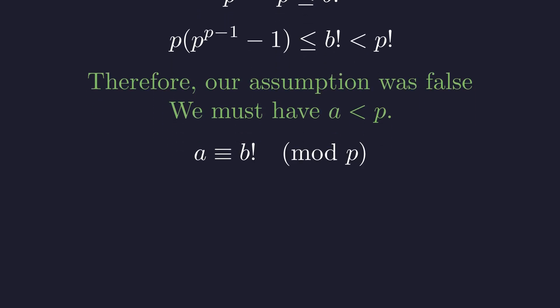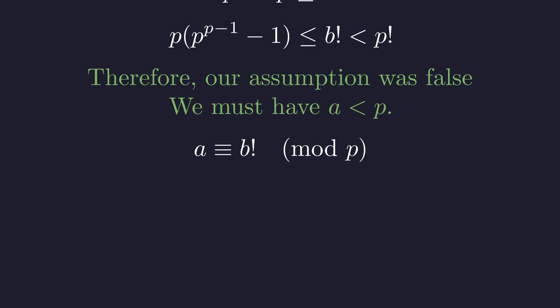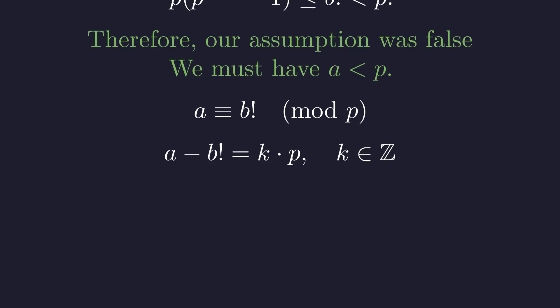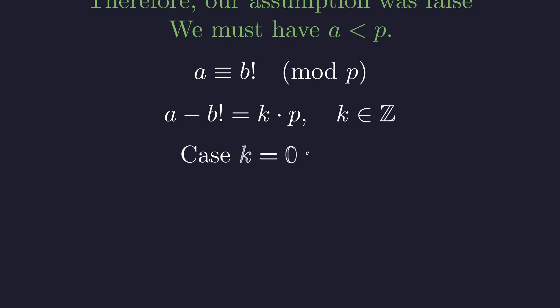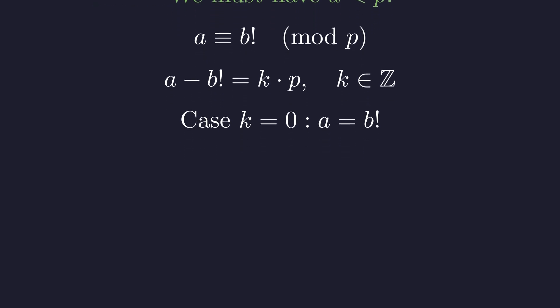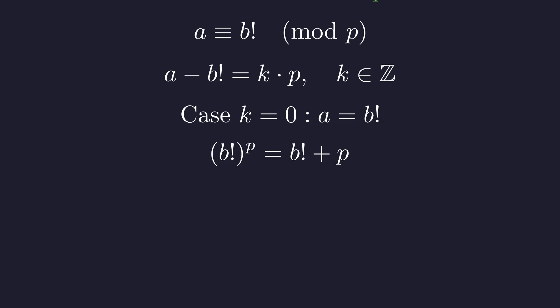With A less than P, Fermat's Little Theorem holds and we use our congruence: A is congruent to B factorial modulo P, meaning their difference is an integer multiple of P. Let's analyze the integer k. If k is 0, then A equals B factorial. Substituting into the original equation gives B factorial to the power of P equals B factorial plus P. For B equals 1 this is impossible, and for B greater than 1 the left side grows far too quickly. There are no solutions here.